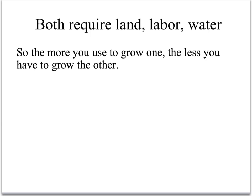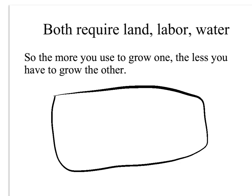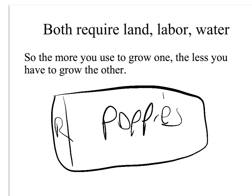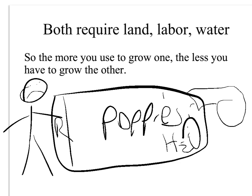Those are the two crops. Both of these crops require the same things: land — some land for roses, the rest for poppies — water, and labor. You can grow poppies and roses on different quantities of land. Now you're growing more roses, fewer poppies.